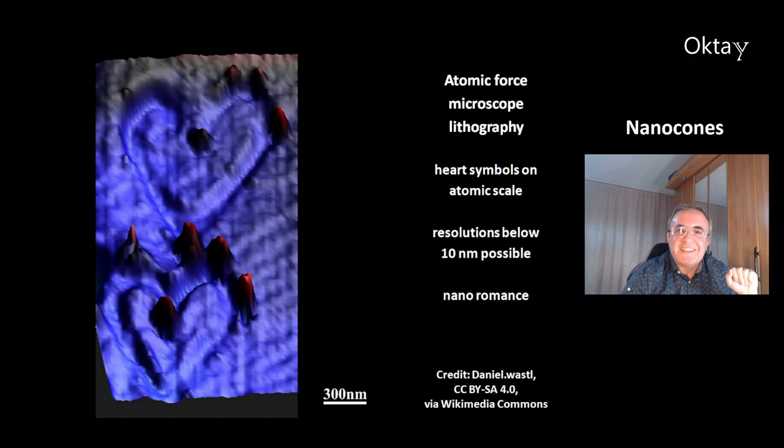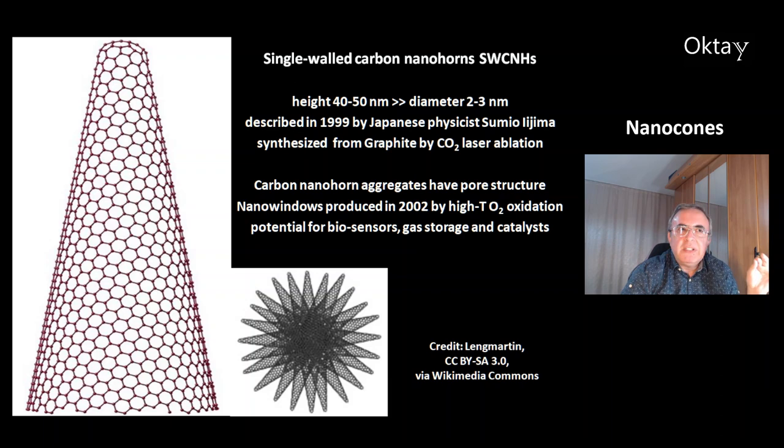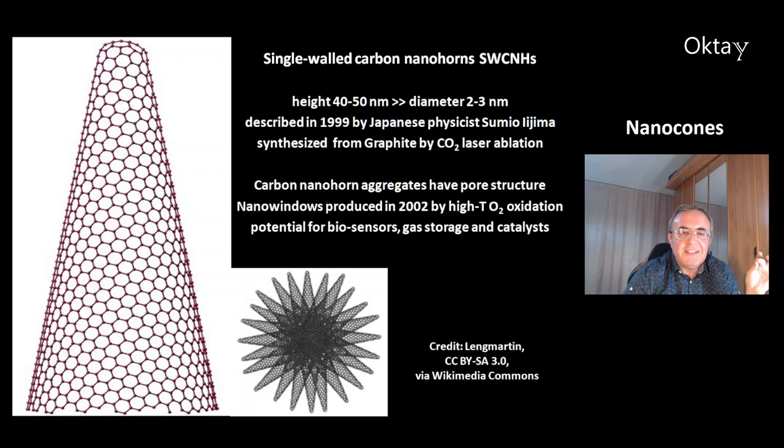This is an example of nanohorns — specifically single-walled carbon nanohorns (SWCNHs). Their height is about 40 to 50 nm, which is much bigger than the diameter, which is about 2 to 3 nm. They were described in 1999 by Japanese physicist Sumio Iijima, and they can be synthesized from graphite by CO2 laser ablation.